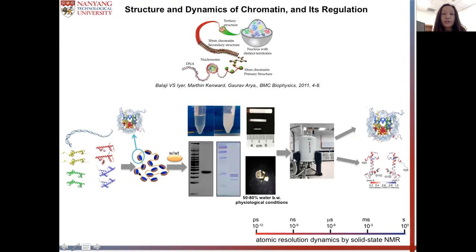A brief introduction: in eukaryotic cells, the DNA wrapped around the histone octamer forms nucleosome core particles, which is NCP in short. NCP interacts with the linker histones and linker DNA to form the high-order structure of chromatin. The activity of DNA is precisely regulated by many factors, such as binding proteins, remodelers, post-translational modifications, etc.